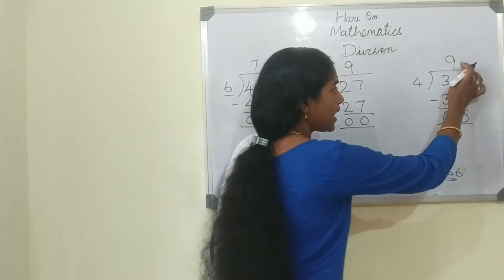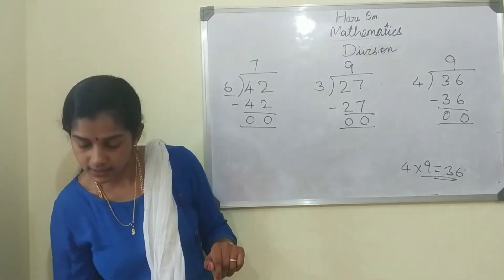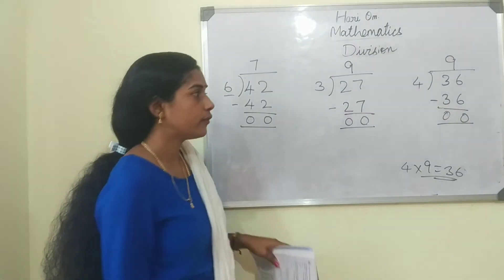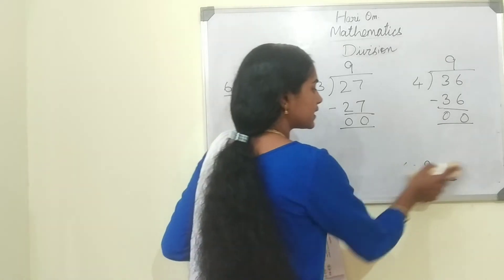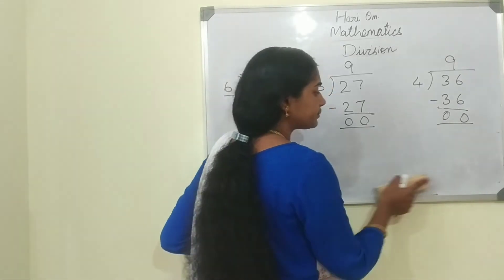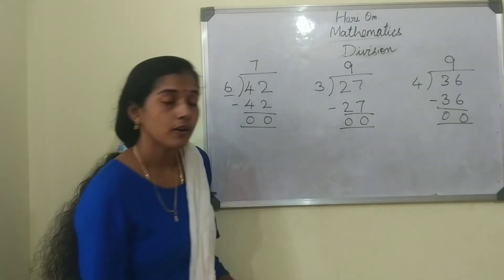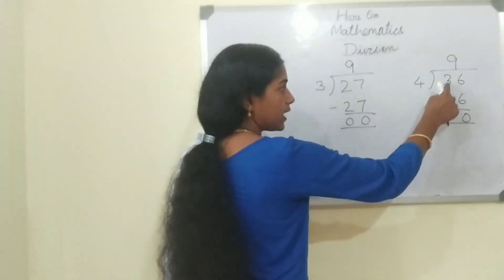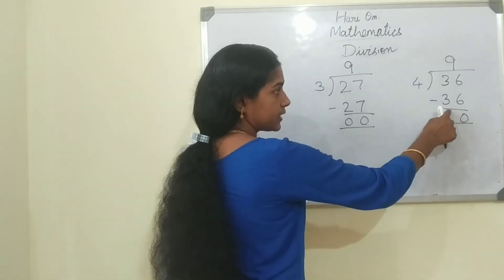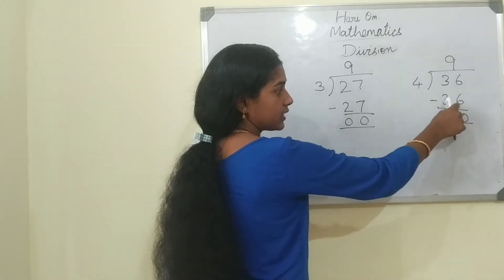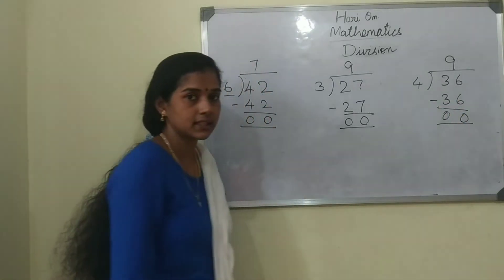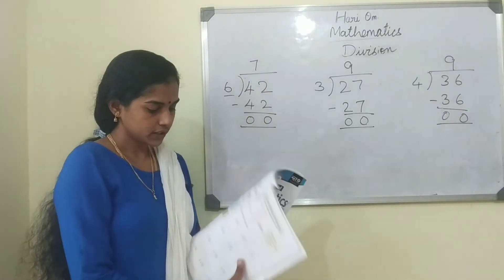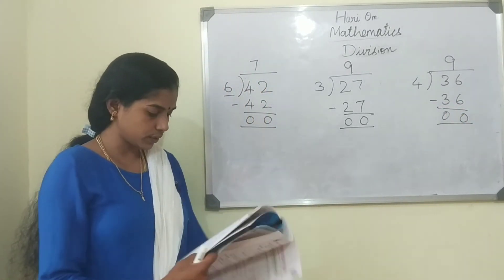The answer is 9. 4 how much are 36? 4 nines are 36. So 36 minus 36 is 0. Next question.